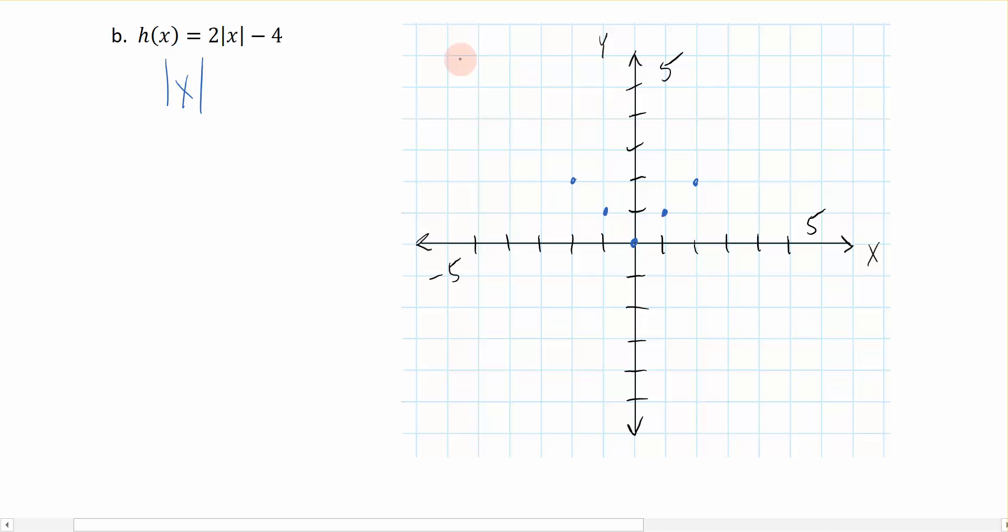Now how do you know what to do next? Well, order of operations tell me that I would do parentheses. I don't have those here. Multiplication. I do have that. And then addition or subtraction.